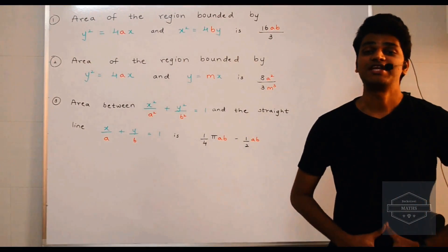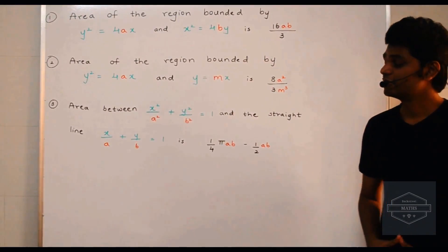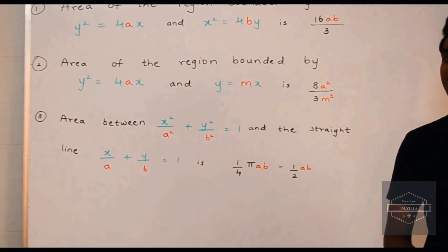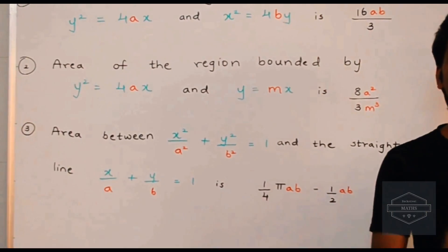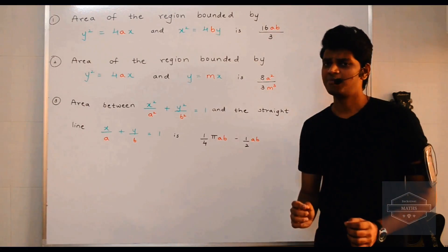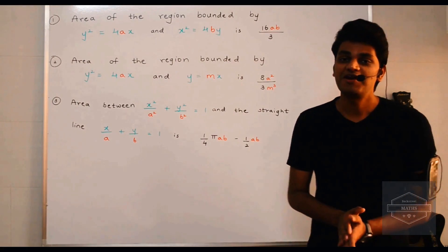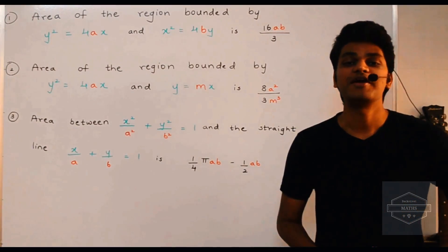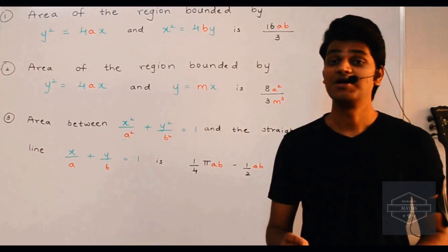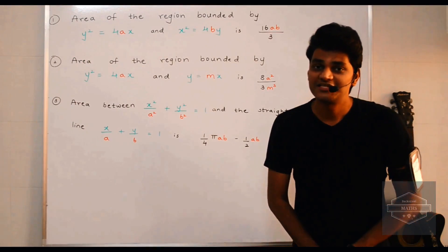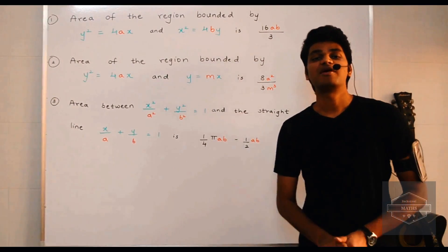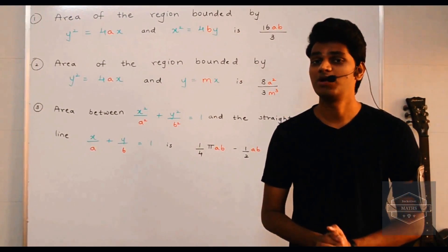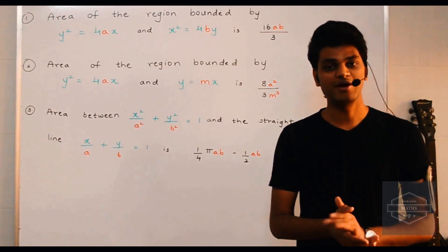The next shortcut: the area between an ellipse x²/a² + y²/b² = 1 and a straight line x/a + y/b = 1 is given by (1/4)πab − (1/2)ab. This formula is a bit long, but you can memorize it by repeating it in a rhythm — for example, '1/4 πab minus 1/2 ab' — or create your own rhythm to memorize it.